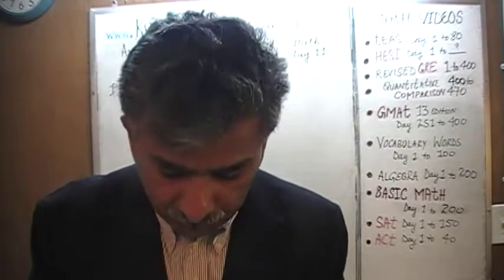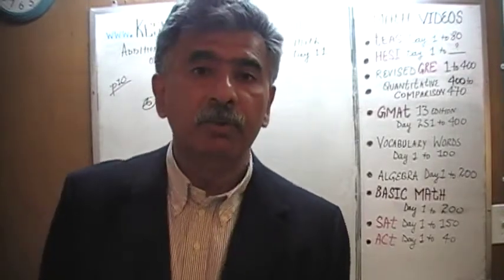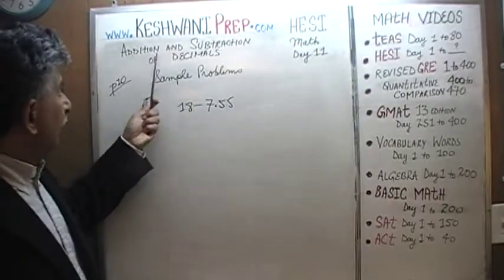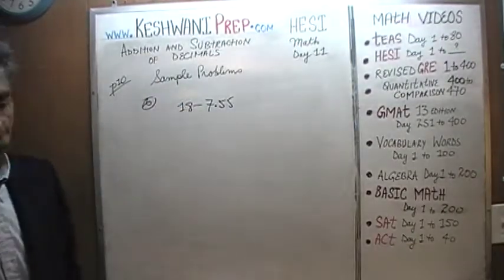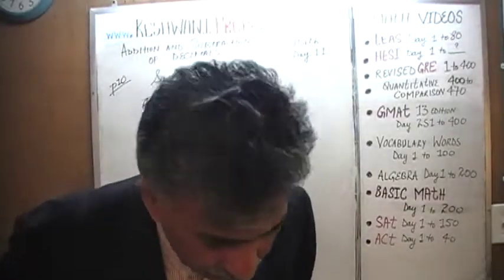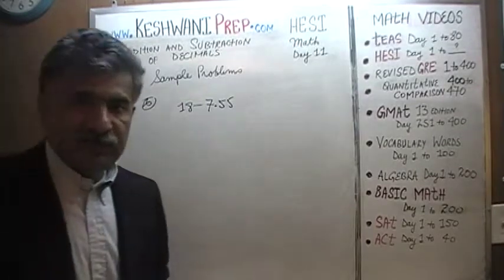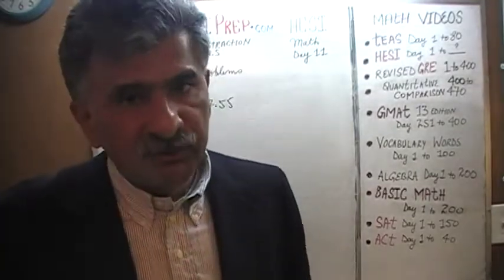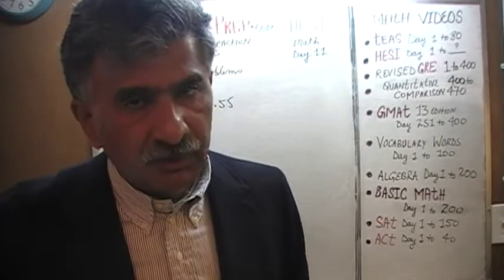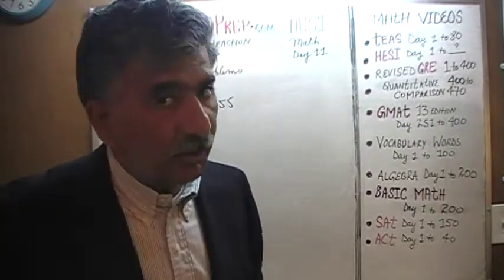Right now, we are in the process of dealing with the notion of addition and subtraction of decimals. Today is our lesson number 11. We are on page number 10. On the top of the page you will see sample problems 1 through 10. We did the first 5 yesterday. We are going to pick up from problem number 6.